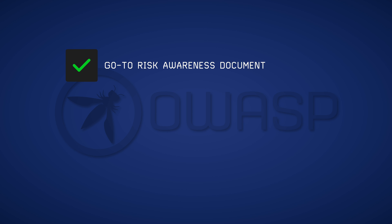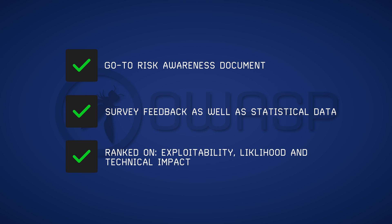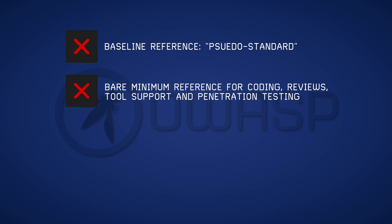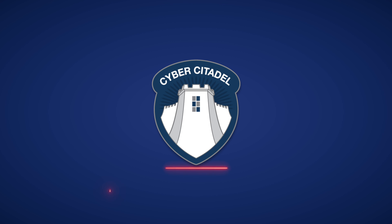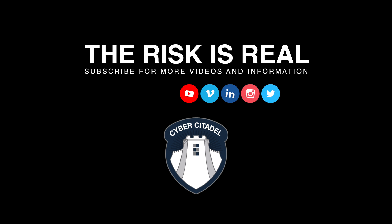The OWASP Top 10 is the go-to listing for anyone concerned with raising their awareness of top risks. The addition of survey considerations, as well as pure statistical data, means that OWASP does not solely rely on data collected by automated tests. Where possible, the categories are ranked given three main considerations: exploitability, likelihood, and technical impact. However, OWASP themselves claim that it is a baseline — a pseudo-standard even — for compliance, education, and vendor tools. As an awareness document, it is regarded as the bare minimum reference for standards of coding, code reviews, peer reviews, tool support, and penetration testing. Being focused on AppSec means that many of the top 10 findings cannot be easily tested for in-house. Being a voluntary service means that participants releasing information publicly do so theoretically, without the experience of a real-world attack. If you're keen to hear more about OWASP's Top 10 list, keep an eye out for our next video which compares OWASP's findings with our own list of top 10 risks. The risk is real. Defend with Cyber Citadel.